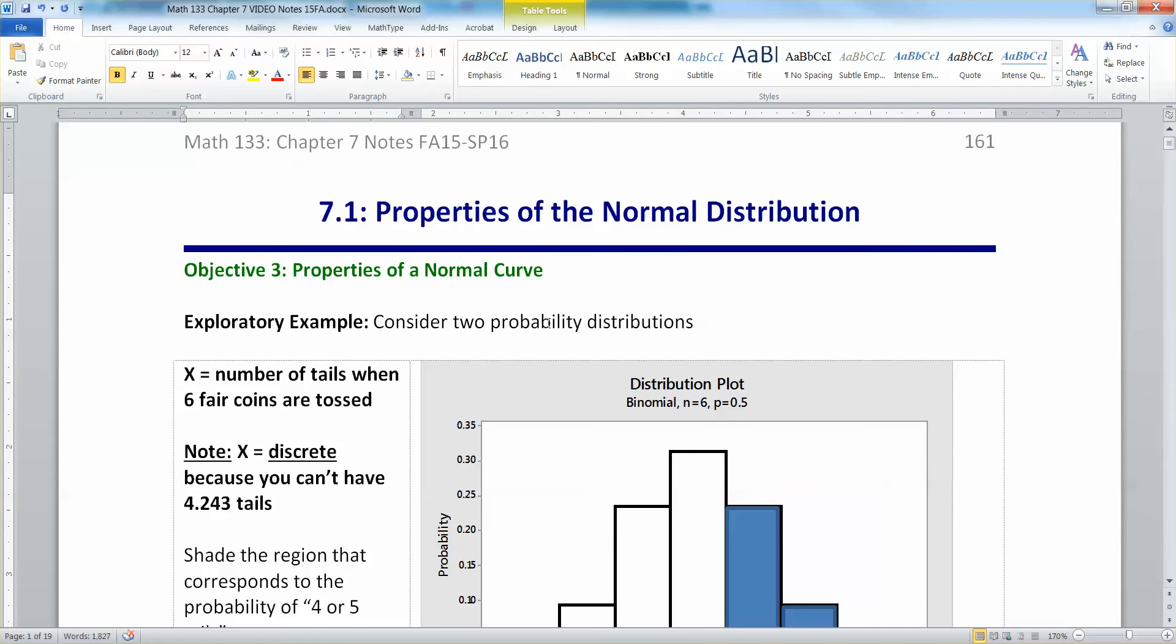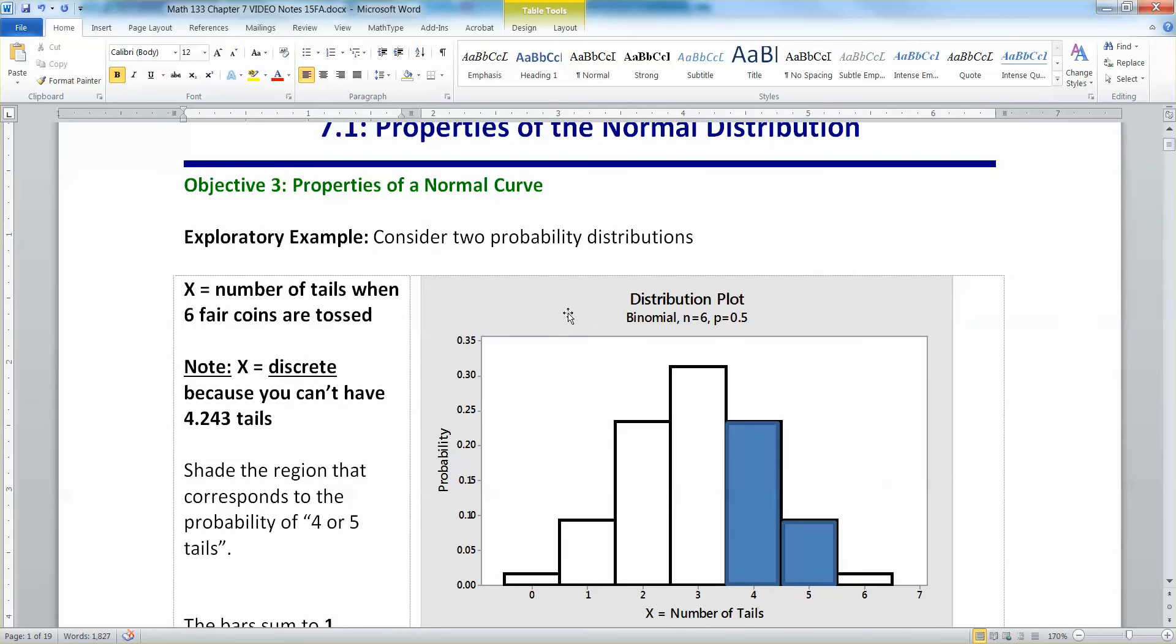Okay, so now before we head into the normal curve, let's consider where we're coming from. We were just working with binomial distributions. Now, binomial distributions are discrete distributions. So let's look at this particular example. We have x being the number of tails that land up when you toss six fair coins. So you can imagine you have six pennies in your hand. You throw them up in the air. What do they land on? Well, that's a discrete distribution because you can't have 4.243 tails. You either have four tails showing or you have five tails showing. And that's it.